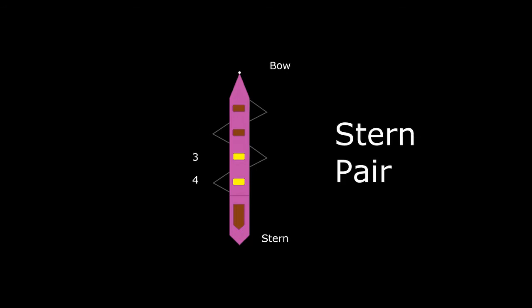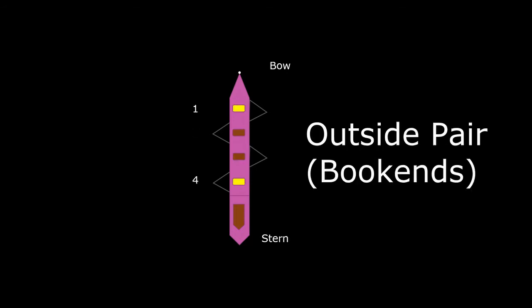In a four, bow pair, stern pair, middle pair, outside pair, sometimes called bookends.